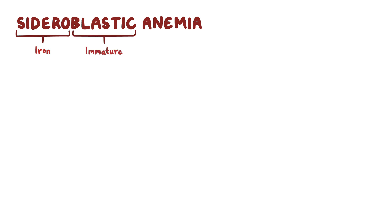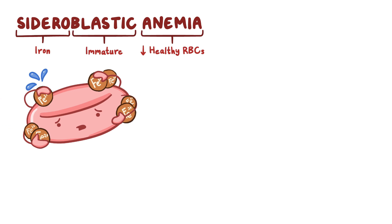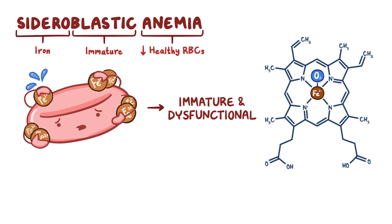With sideroblastic anemia, sidero means iron and blastic means immature, and anemia refers to a condition where there's a decrease in the number of healthy red blood cells, or RBCs, in the body. So sideroblastic anemia is a type of blood disorder where there's a buildup of iron in the RBCs, causing them to be immature and dysfunctional. This buildup occurs because these RBCs are unable to incorporate iron into hemoglobin, which is necessary for RBCs to transport oxygen.